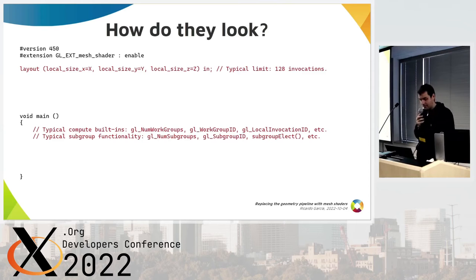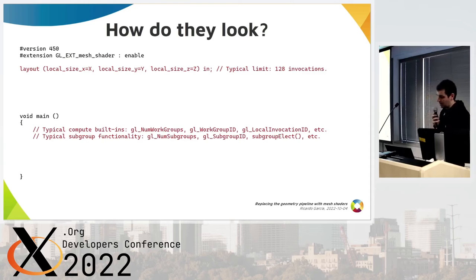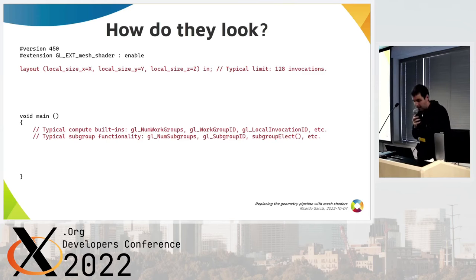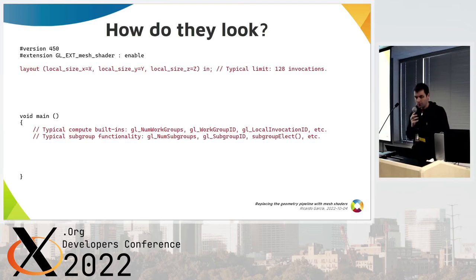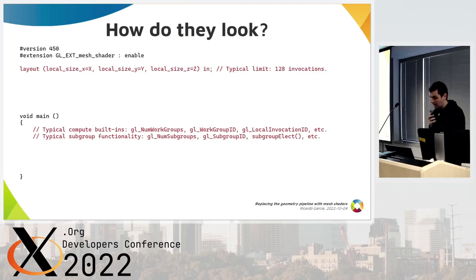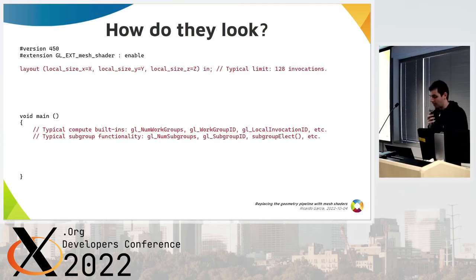There's also a properties structure in Vulkan where you can check the recommended maximum size for work groups according to the driver. Inside the body of your shader, you get access to the typical built-ins for compute shaders, like the number of work groups, work group ID, local invocation indices, etc. And if subgroups are supported, you can also use subgroup operations and built-ins.